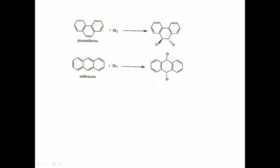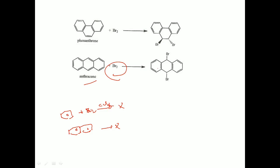One interesting point: phenanthrene can decolorize bromine solution. Alkenes react with bromine solution causing decolorization — that is the test for unsaturation. Generally benzene does not react with bromine solution in CCl4 — no reaction. In case of naphthalene also, no reaction. But in the case of anthracene, there is a reaction — decolorization of bromine solution occurs, with addition at the 9 and 10 positions.